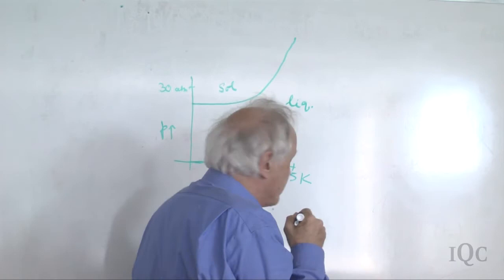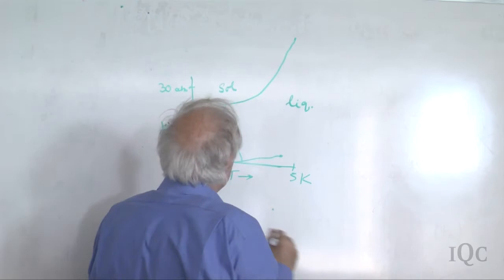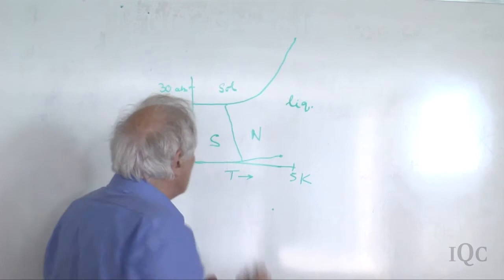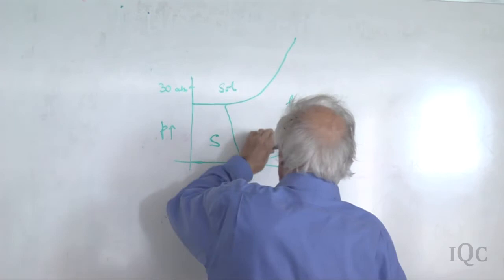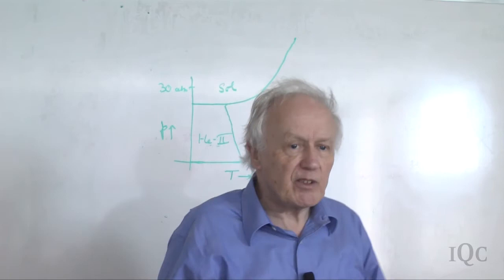The interesting feature of the helium phase diagram is the so-called lambda line. On one side, the helium is in the normal phase and behaves pretty much like any other liquid. On the other side, we call it a superfluid. The more common notation is that this is the helium-1 phase, and here is the helium-2 phase, which shows various anomalous properties.